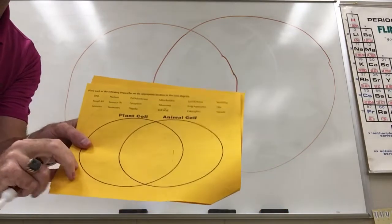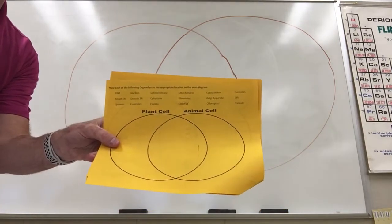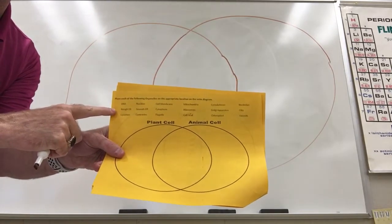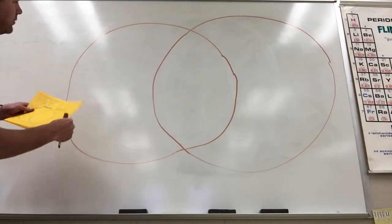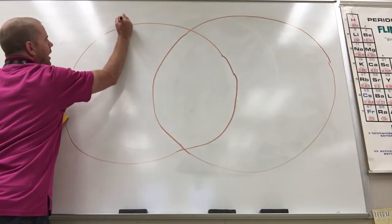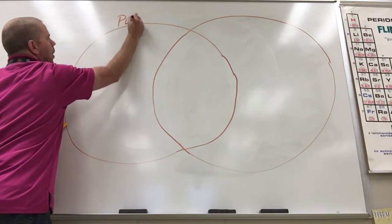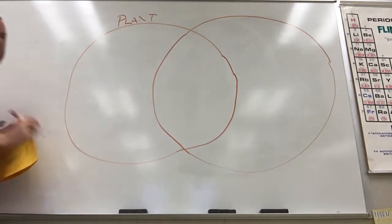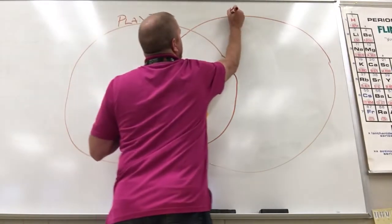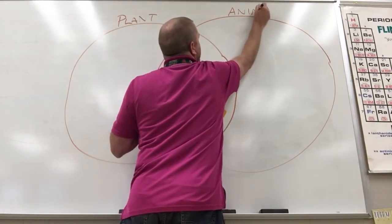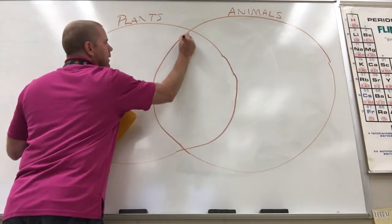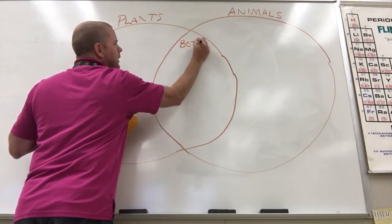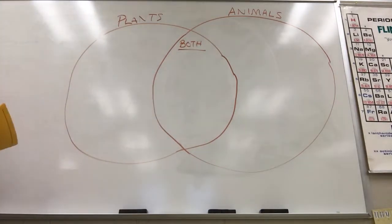Alright class, what we're going to do is create a Venn diagram utilizing the organelles listed at the top of your cellular biology packets. On the left-hand side we are going to place items exclusive only to plants, on the right things exclusive only to animals, and in the middle anything that applies to both. There's going to be a lot of stuff that fits in the center.